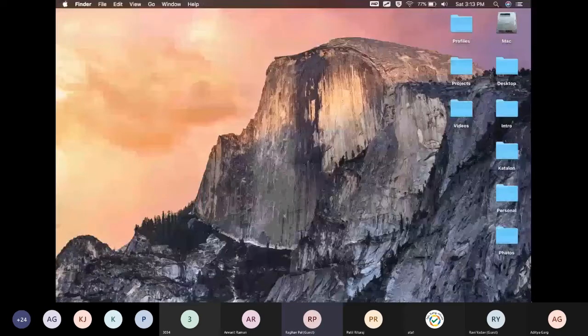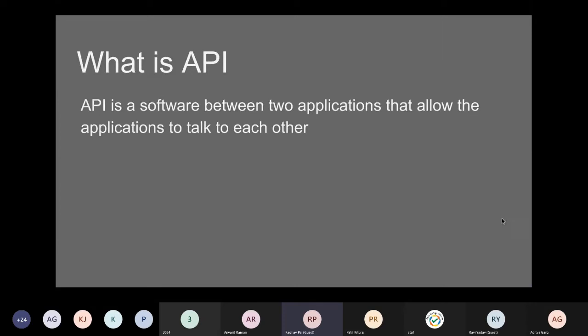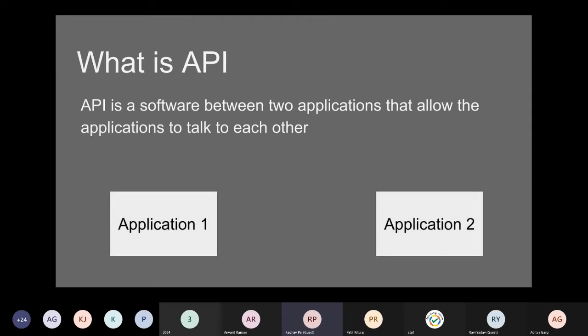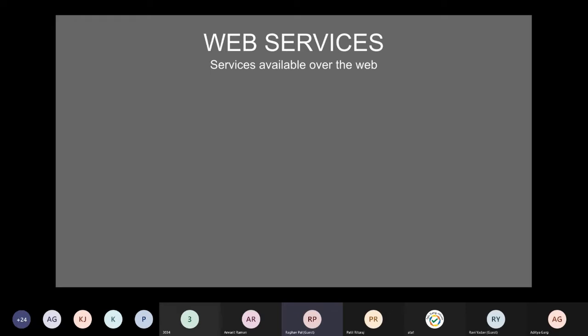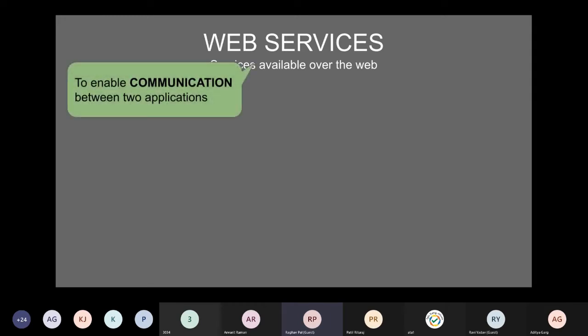What is an API? An API is a kind of intermediary between two applications that allows two applications to talk to each other. You can think of APIs as having two applications — one can be a server and one can be a client. Application one sends a request to application two, and the second application responds back with a response. This communication — the request and response — takes place with the help of APIs. Web services are APIs available over the web, helping communication between two applications.